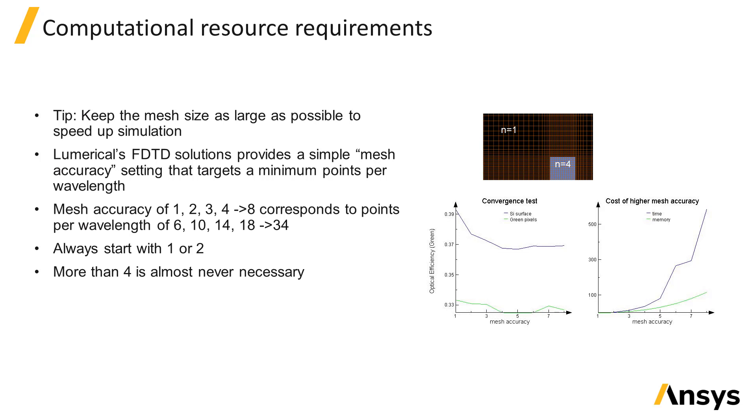It is rarely useful to use values larger than 3 or 4 as there is typically something else that limits the accuracy of the simulation at that point. For fine geometric structures or situations such as plasmonic structures where you know the light confinement will be high, the mesh can be controlled locally using mesh override regions.